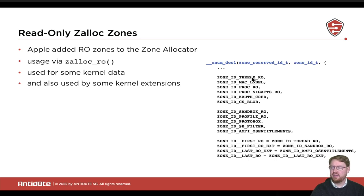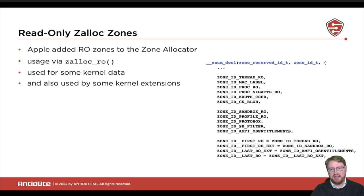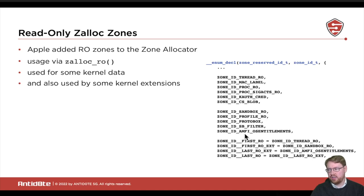These zone IDs tell you which data structures are currently protected with this read-only allocator. You can see the threads data, MAC labels, proc structures, syscall actions from procs, process credentials, and code signing blobs — these are the data structures that the main kernel makes read-only. Then there are the so-called external read-only zones: sandbox, sandbox profile, protobox, spfilter, and from AMFI, the AMFI OS entitlements. All of these are read-only zones used by kernel extensions.